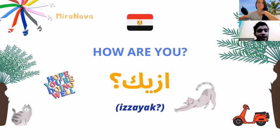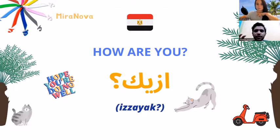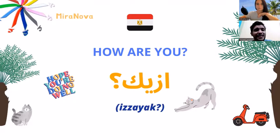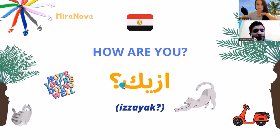It literally means 'how is your condition' - tell me about your condition, like 'how are you doing'. Now, if I'm talking to a girl, I say 'izzayik'. If I'm talking to a man, I say 'izzayak'.